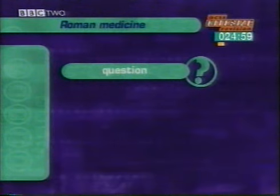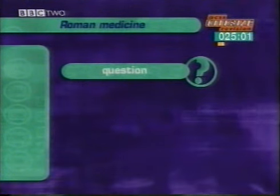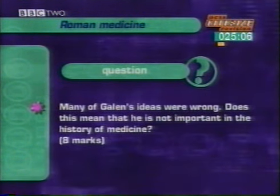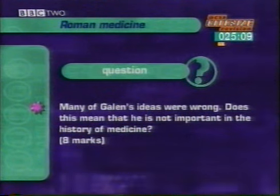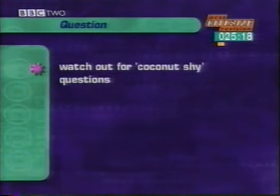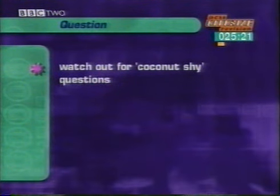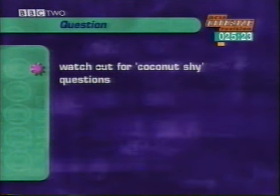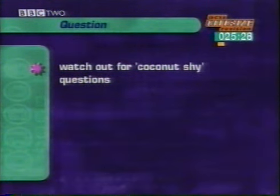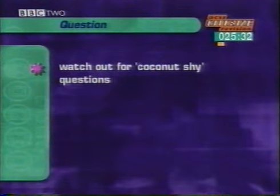You may well be asked to write about Galen in the exam. Here's an example: 'Many of Galen's ideas were wrong. Does this mean that he is not important in the history of medicine?' This question would probably carry eight marks. This style of question is like a coconut shy, inviting you to knock it down. It gives some information by saying that Galen made mistakes, tells you what to write about — how important Galen was — and asks you to comment on it. This kind of question is often used in an exam.